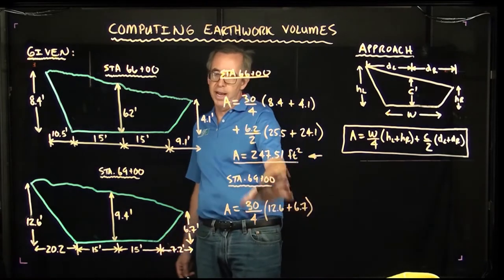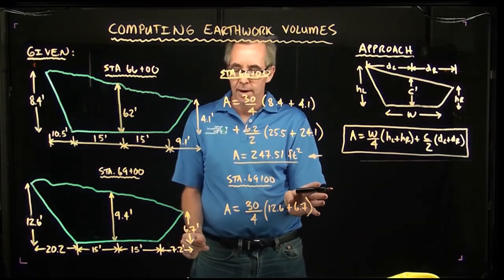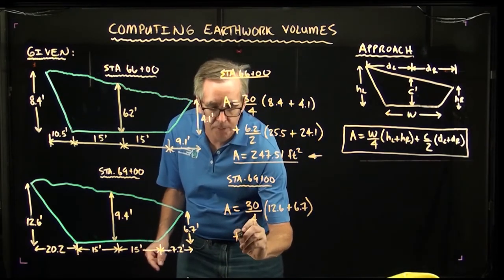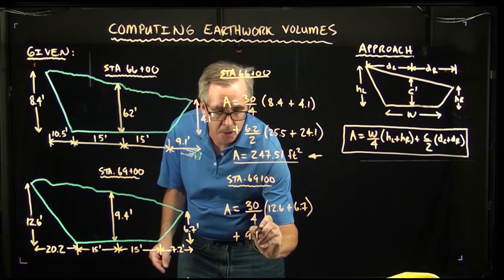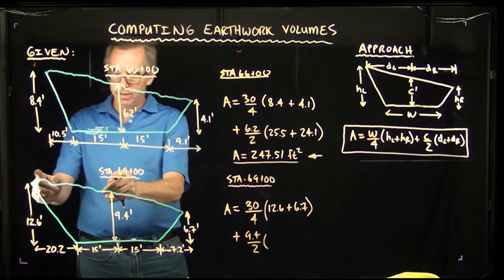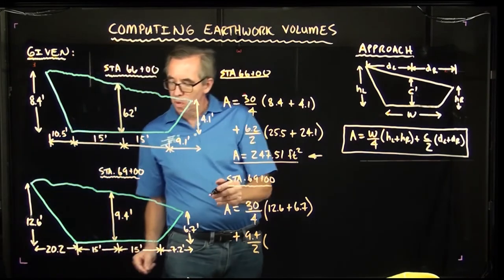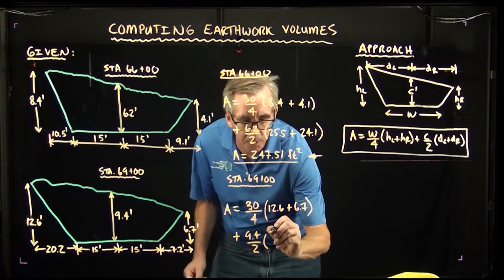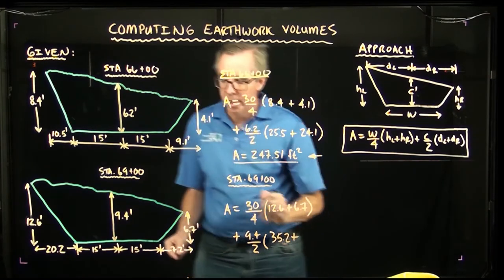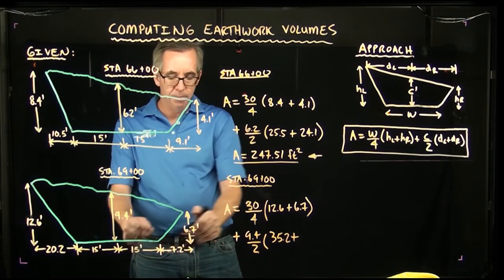I'm just doing it this way right now for lack of space. And then we have the center dimension, which is 9.4 over 2, and then we're going to add that to the distance on the left, which would be 15 plus 20.2, which is 35.2. And then here we have 15 plus 7.2, which is 20.2.